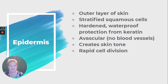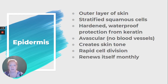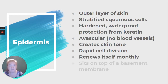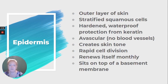Your skin replenishes about every 30 days, so that makes sense that you need some rapid division. It renews itself monthly, and it sits on top of a basement membrane — that's a characteristic of epithelial tissue.